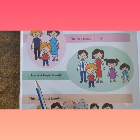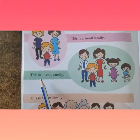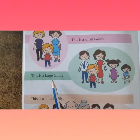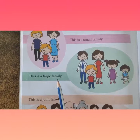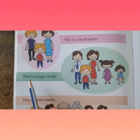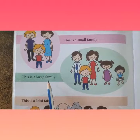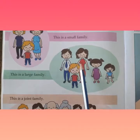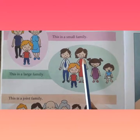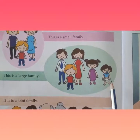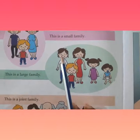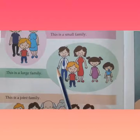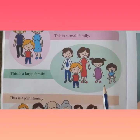T-H-I-S is a L-A-R-G-E F-A-M-I-L-Y — this is a large family. See children, he is father, she is mother, and they have more than two children. If parents have more than two children, that is called a large family.